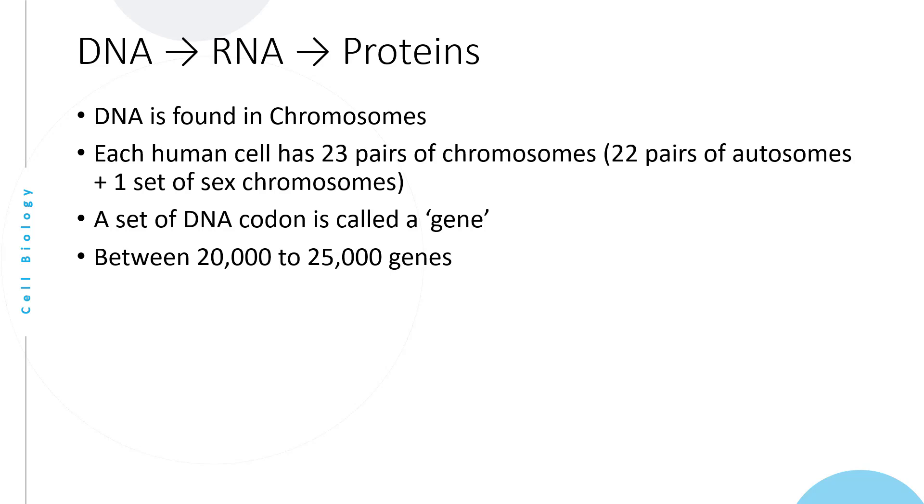A set of DNA codon is called a gene. There are between 20,000 to 25,000 genes in humans. The number of genes does not dictate the complexity of an organism. Interestingly, banana has more genes than us, about 36,000 genes. So it's not just the number; it's how genes are expressed and how complex proteins are formed and perform their function.